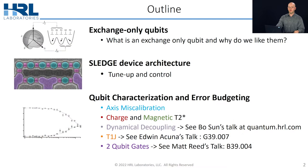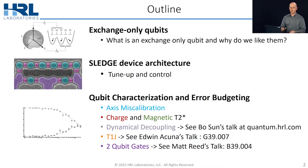The outline of the talk is as follows. I'll briefly remind the audience what an exchange-only qubit is and why we like them here at HRL. I'll then go into the SLEDGE device architecture and how we use it to do tune-up and control of these qubits, and then I'll focus on the qubit characterization and error budgeting,